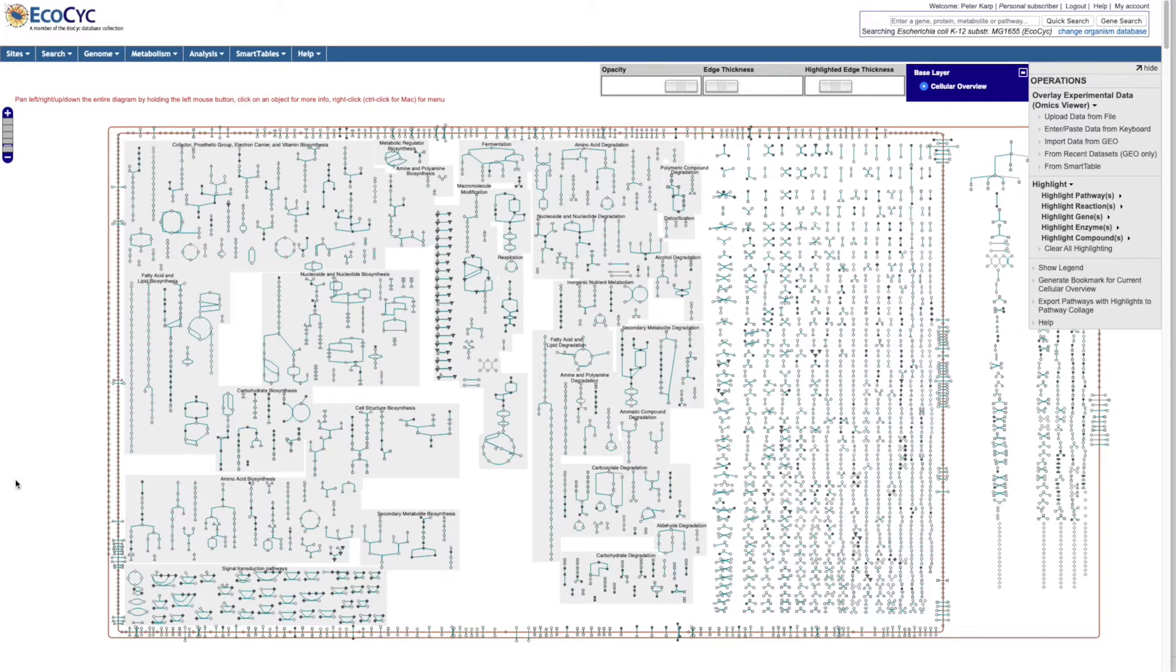Each node in the diagram is a metabolite, and we can identify them by mousing over them, and each line is a metabolic reaction.